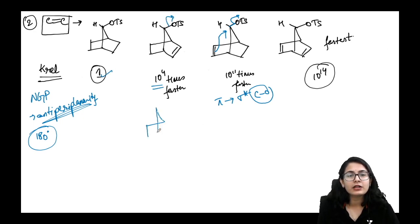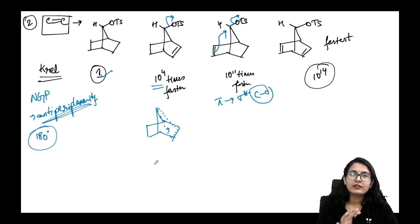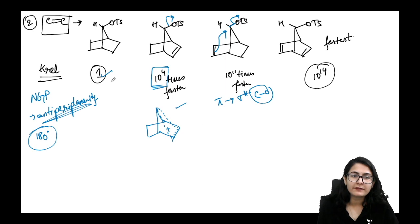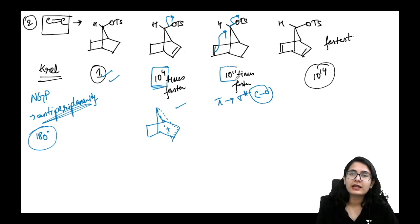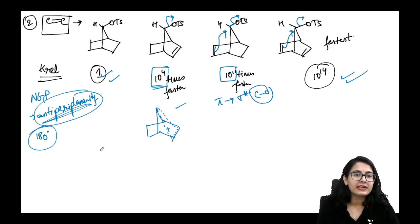Molecule 2 is 10⁴ times faster because even without NGP, the carbocation formed is a non-classical, resonance-stabilized carbocation in the norbornyl system. Molecule 3 benefits from perfect anti-periplanar NGP — 10¹¹ times faster. Molecule 4 has both NGP and carbocation stabilization — making it 10¹⁴ times faster. Anti-periplanarity is a necessary condition for NGP.